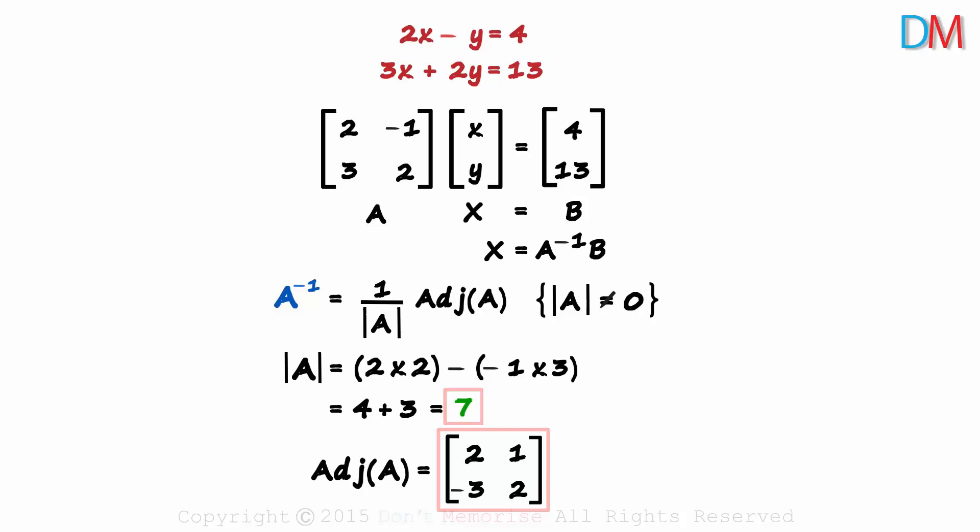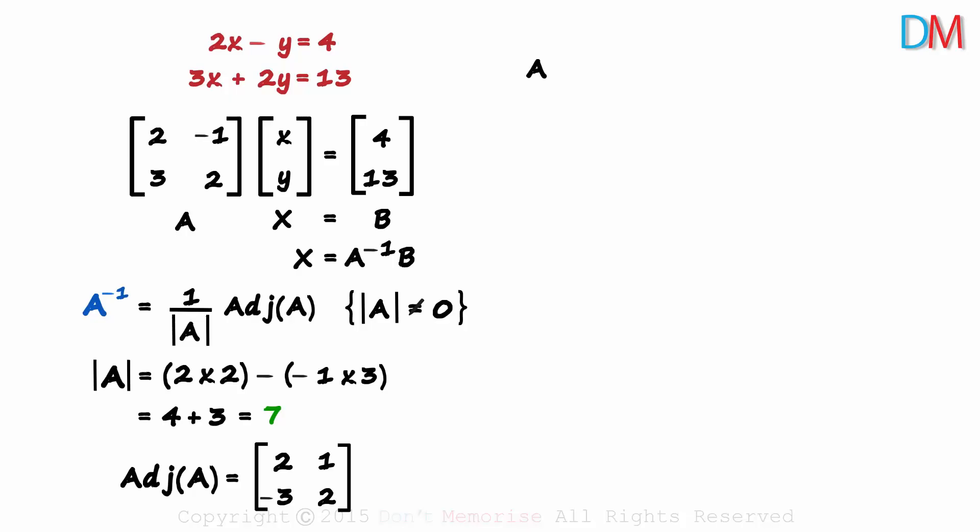With these two, we get the inverse of A. Let's write it on the right hand side. This is A inverse, 1 over the determinant times the adjoint of A. Don't solve for the A inverse immediately. Keep it as is. You'll soon know why. Now that we have A inverse, we come back to this formula.